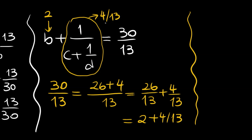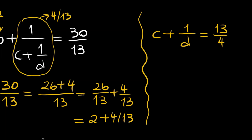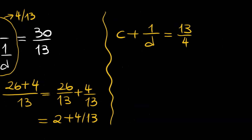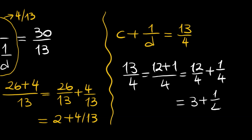So c plus 1 over d should equal the reciprocal, which is 13 divided by 4. Using the same trick, 13 divided by 4 equals 12 plus 1 divided by 4, which is 12 divided by 4 plus 1 over 4, and that is 3 plus 1 over 4. So c becomes 3.